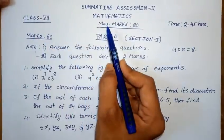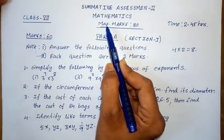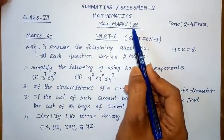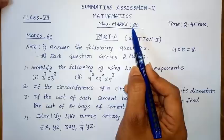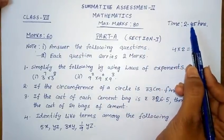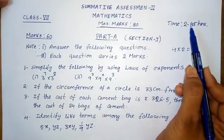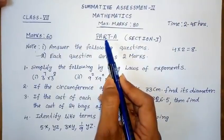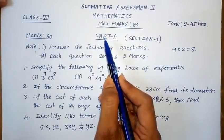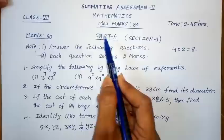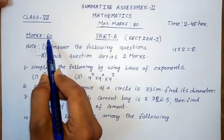The SA2 model paper consists of a total maximum of 80 marks. The total time is 2 hours 45 minutes. This question paper contains two parts: Part A and Part B. Part A contains a maximum of 60 marks.